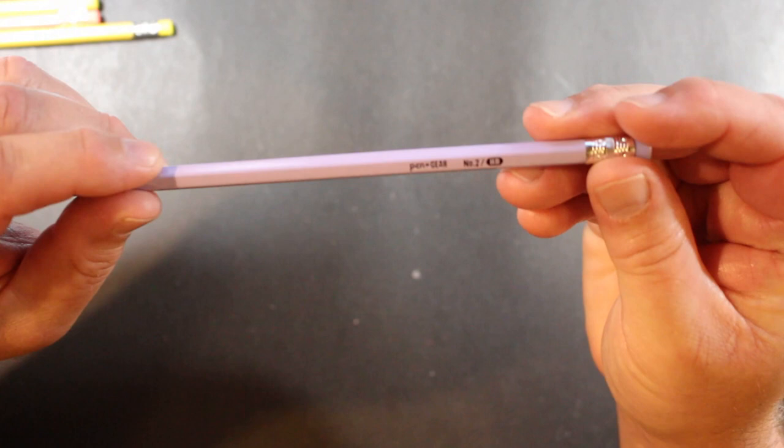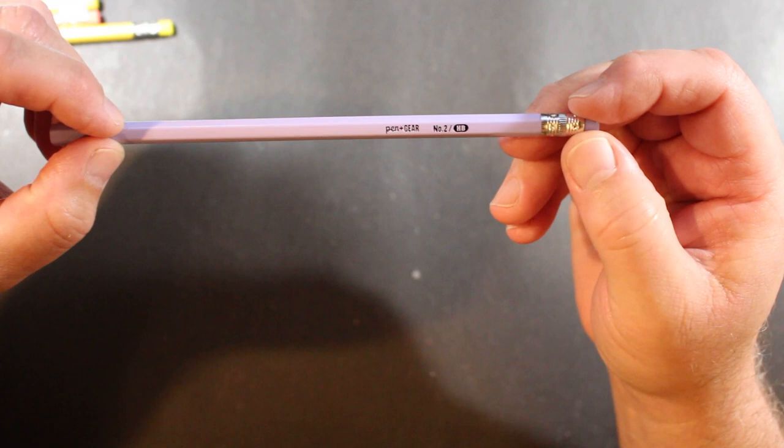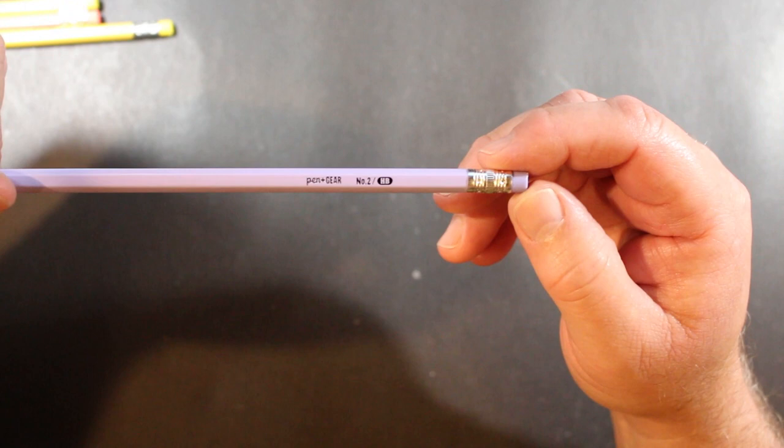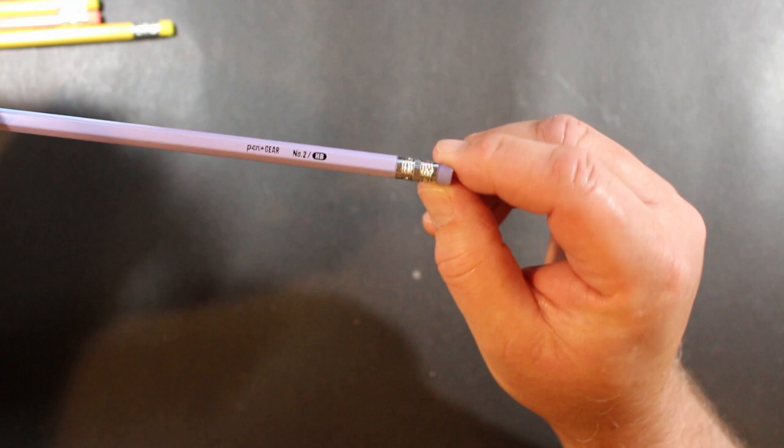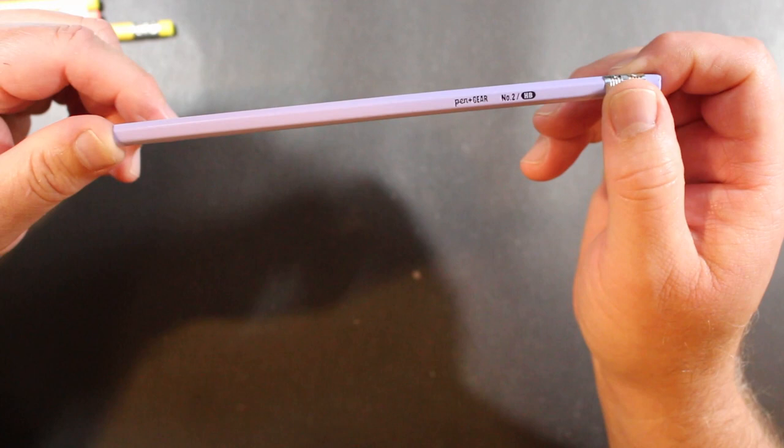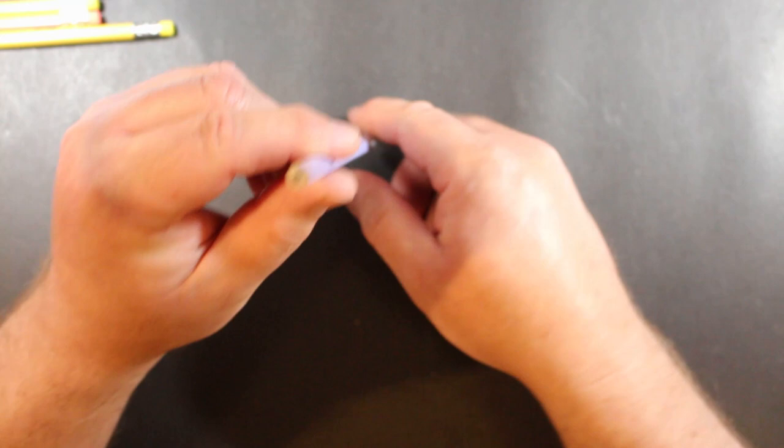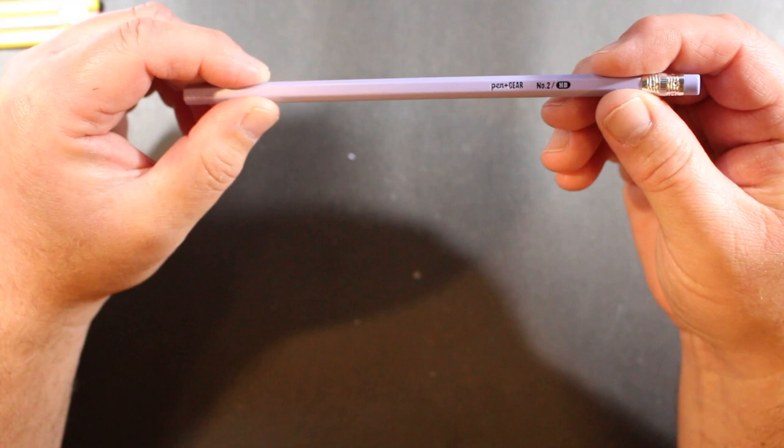And it is this pen and gear number two HB. So I don't know why they didn't put it on the box that these are number two pencils, but they didn't, but they are on the pencil themselves. Again, we have a kind of a chrome toned ferrule crimped on, an eraser crimped on. In this case, it's a purple eraser to match sort of this really light purple, I'd almost call it like a lilac-y kind of a color. There's the core. And yeah, nice.